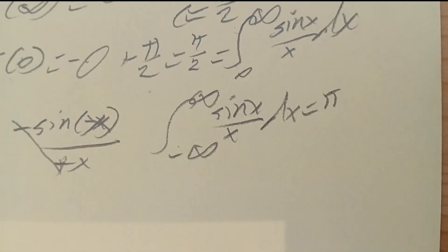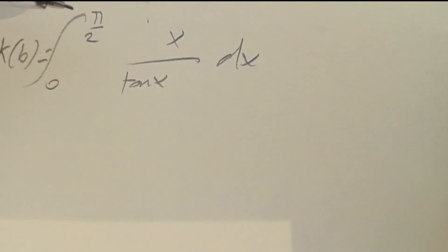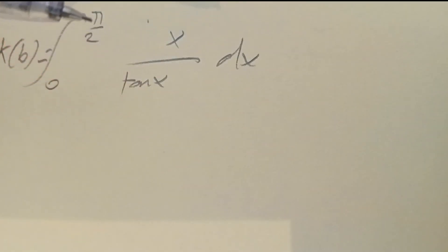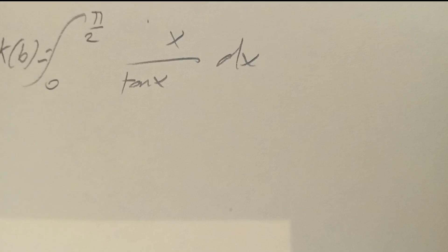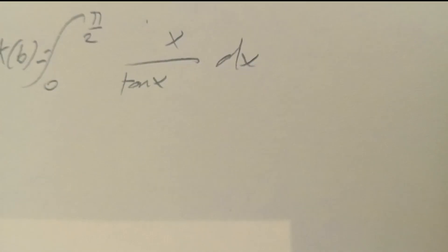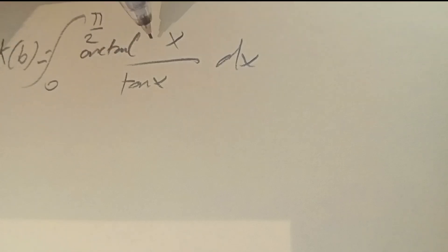I've got one more integral. K(b) is equal to the integral from 0 to pi/2 of x over tangent x, dx. Where do we put our parameter b? I don't want to integrate cotangent. What I'm going to do is use arctan of (b times tan x), so that when we use the chain rule, things cancel out. Let's take the partial derivative.